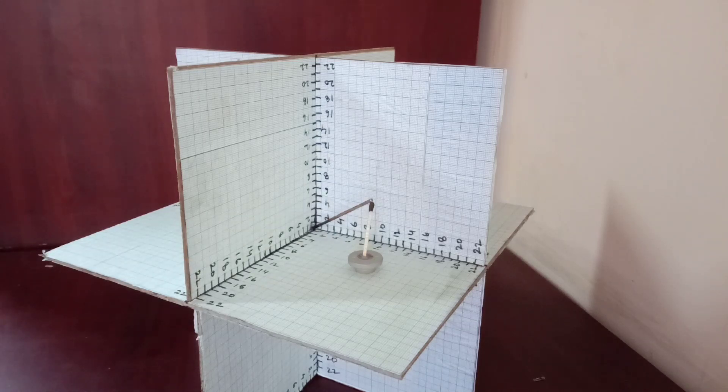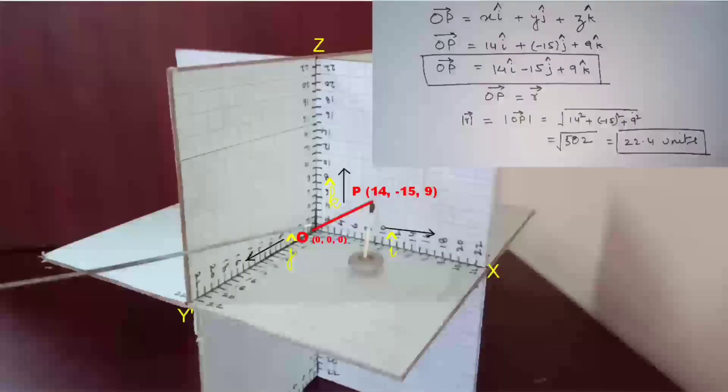So vector OP is equal to 14i cap minus 15j cap plus 9k cap.